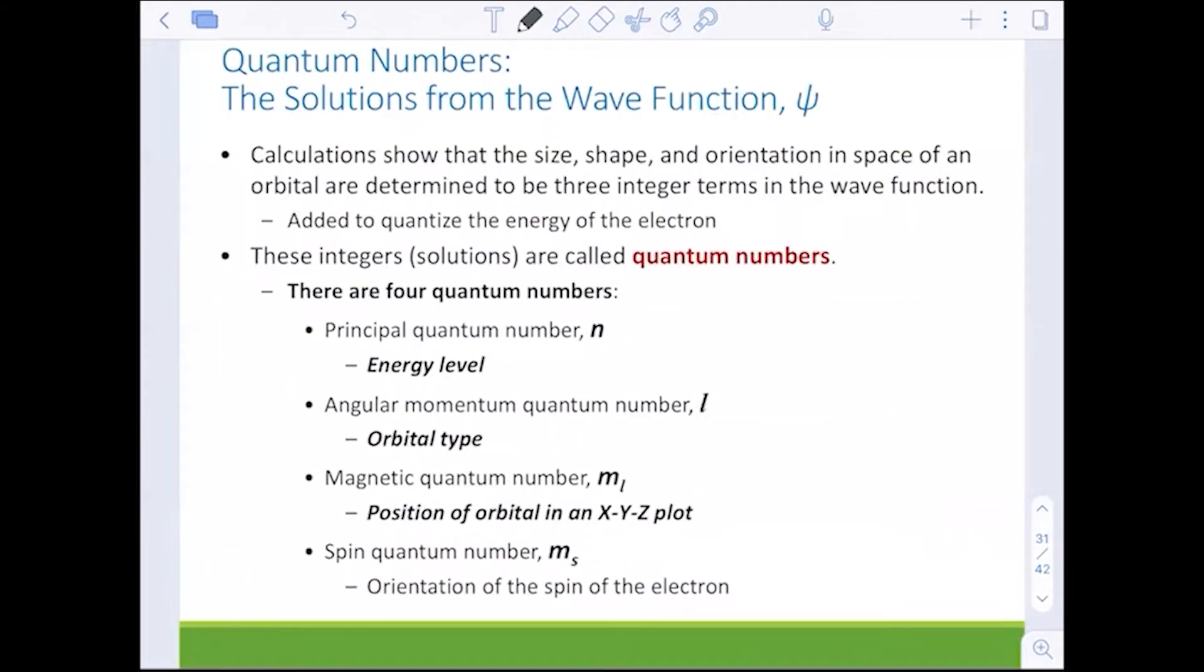We'll dive into these a little bit more once we discuss the actual locations of where an electron could be. I say could because it's a probability. Quantum numbers are our solutions to the wave function. Now with quantum numbers, there are four main quantum numbers. We're going to go over all of them individually and see how they are related to each other.